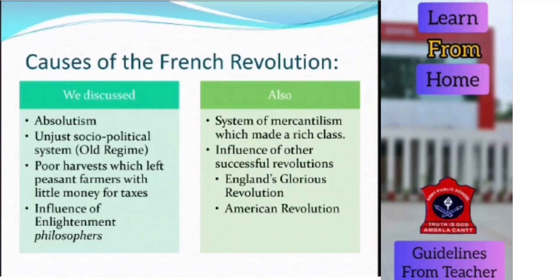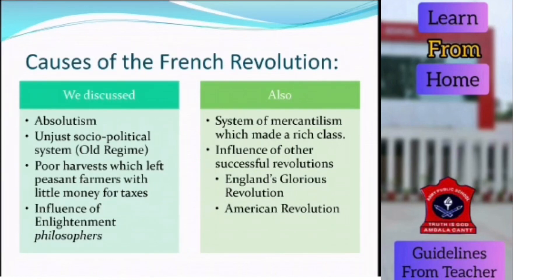Let us discuss the causes of the French Revolution. Absolutism and the old regime structure have already been discussed. Poor harvests, and the influence of Enlightenment philosophers such as John Locke, Montesquieu and Rousseau — it was a follow-up of the Renaissance period. The system of mercantilism had raised a rich class of merchants who demanded rights for themselves. The influence of successful revolutions nearby, especially the American Revolution, also played a role.